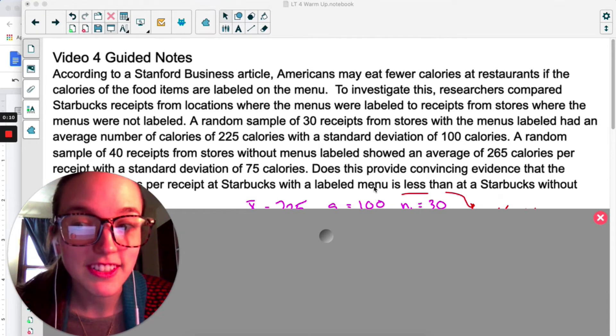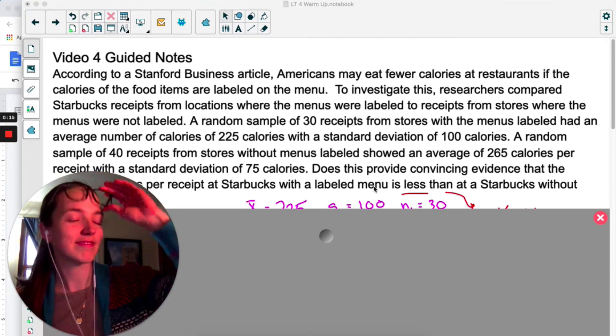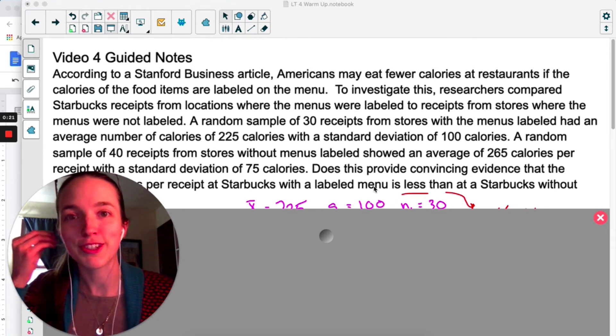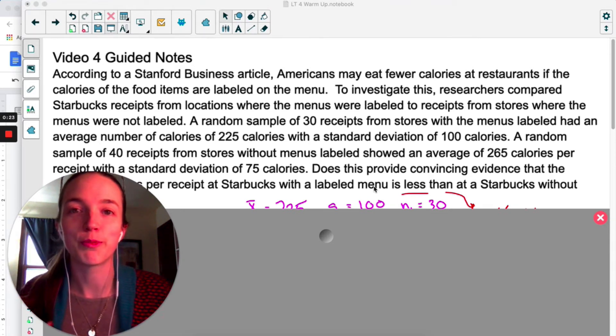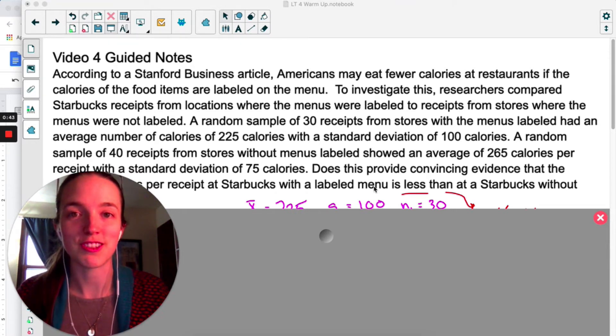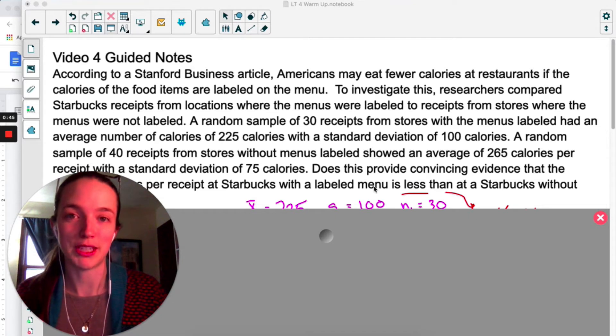To be honest, there's not really anything new in this video. We're doing significance tests for two means. We pretty much did this in the last video when we talked about sampling distributions of two means.